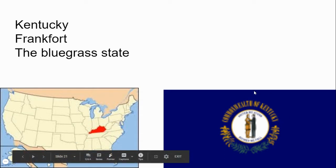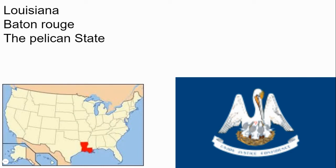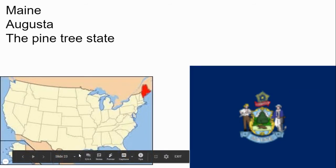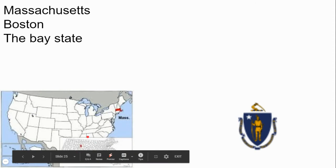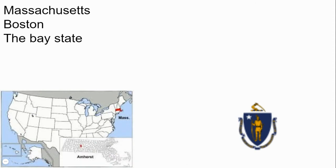The state is Kentucky and its capital is Frankfort and its nickname is the Bluegrass State. Louisiana with Baton Rouge as its capital and the nickname the Pelican State. The state is Maine and Augusta is its capital and the nickname is the Pine Tree State. The state is Maryland with Annapolis as its capital.